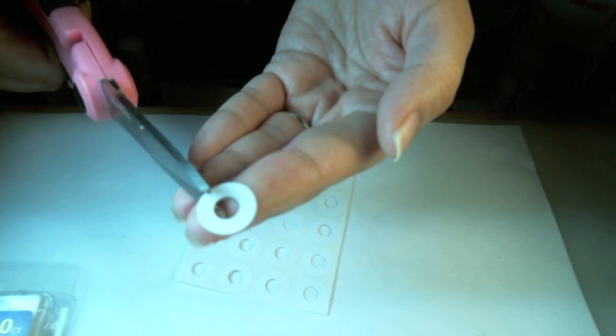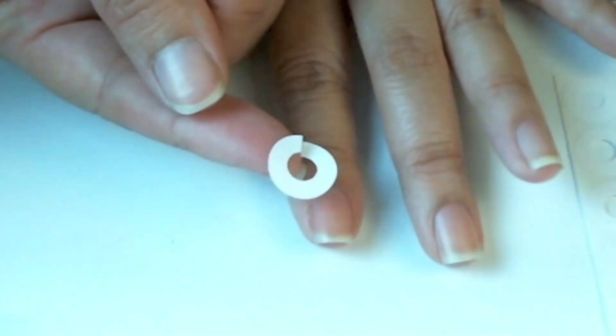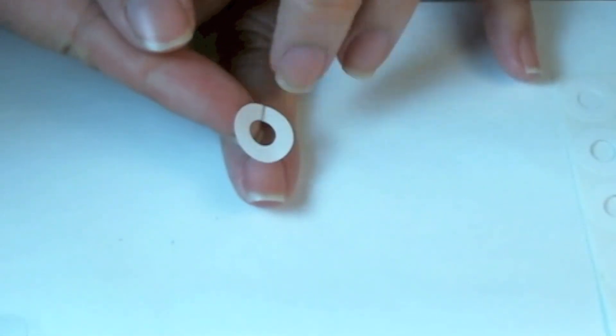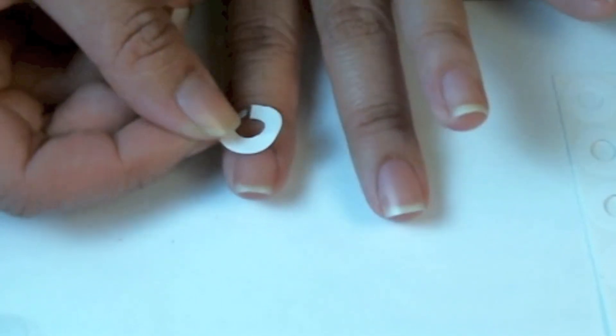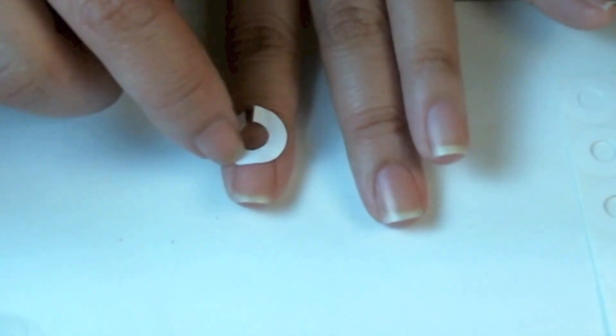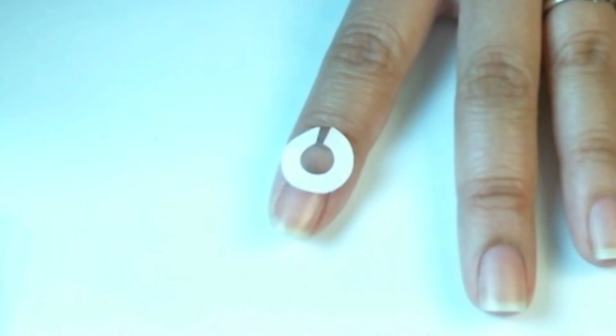I'm going to peel one off and snip one side. I'm going to place it on the bottom half of my fingernail. This will create the half moon design. Make sure it sticks really well.